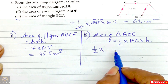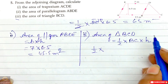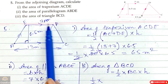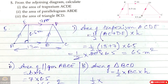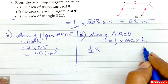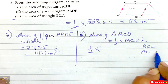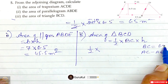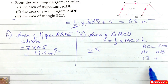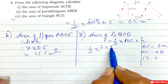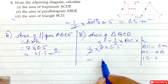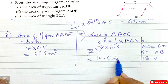So area of triangle B, C, D equals half into B, C into height, which is half into 6 into 6.5. After reduction, the answer is 19.5 meter square.